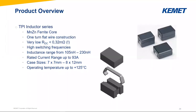Finally, our TPI inductor series. The difference here is the manganese zinc ferrite core. The most important thing is that we have a one-turn flat wire construction — always only one turn — which gives us very low RDC, lower than 0.32 milliohms, and allows very high switching frequencies. We have a limited inductance range, but this is interesting enough for all relevant applications. We have very high rated current ranges up to 93 amps. The smallest case size is 7×7 mm, and the operating temperature is up to 125°C. This component is without AEC-Q200 qualification.